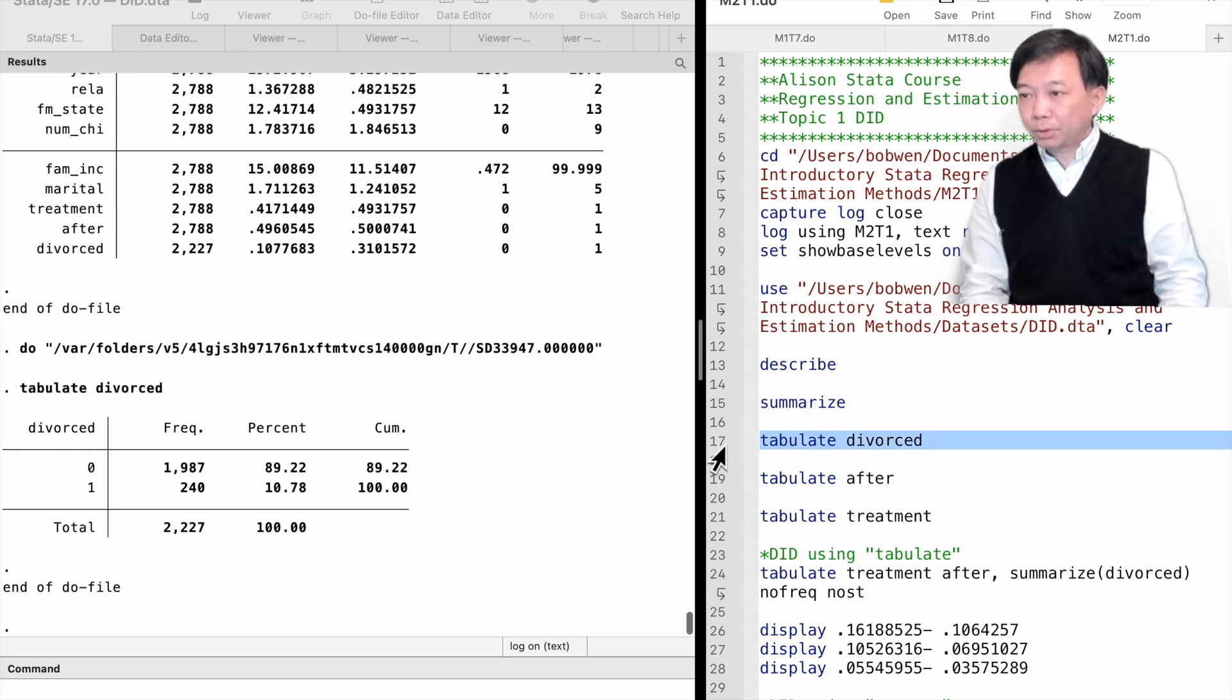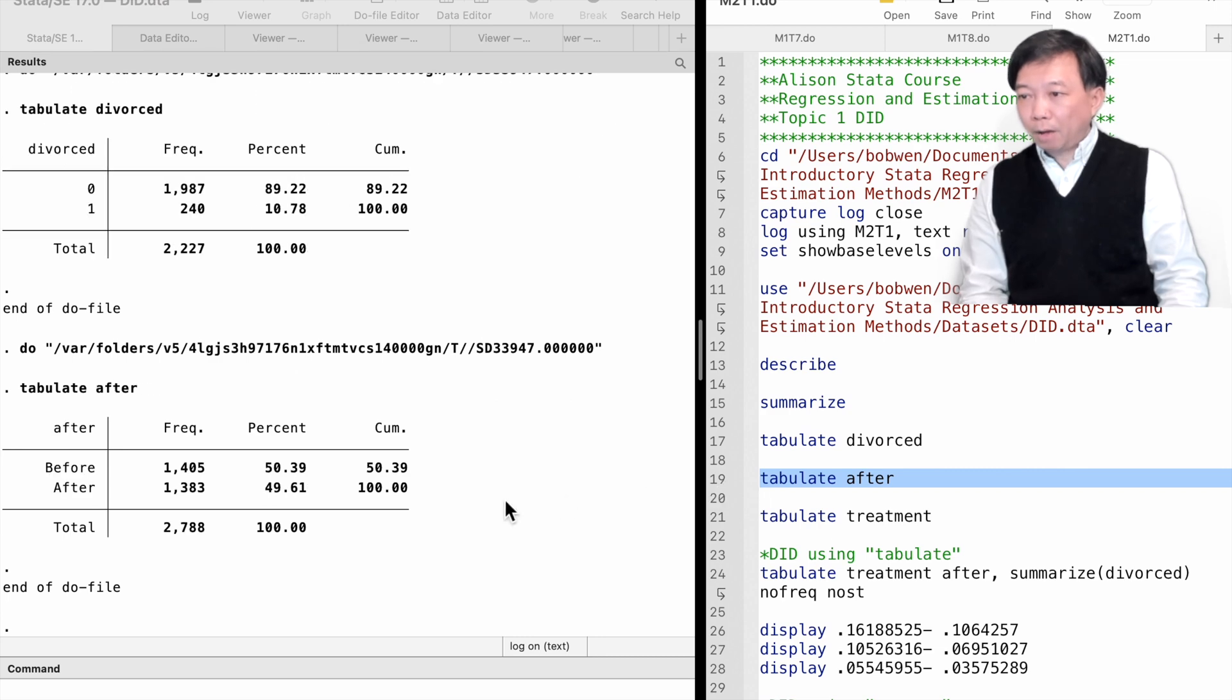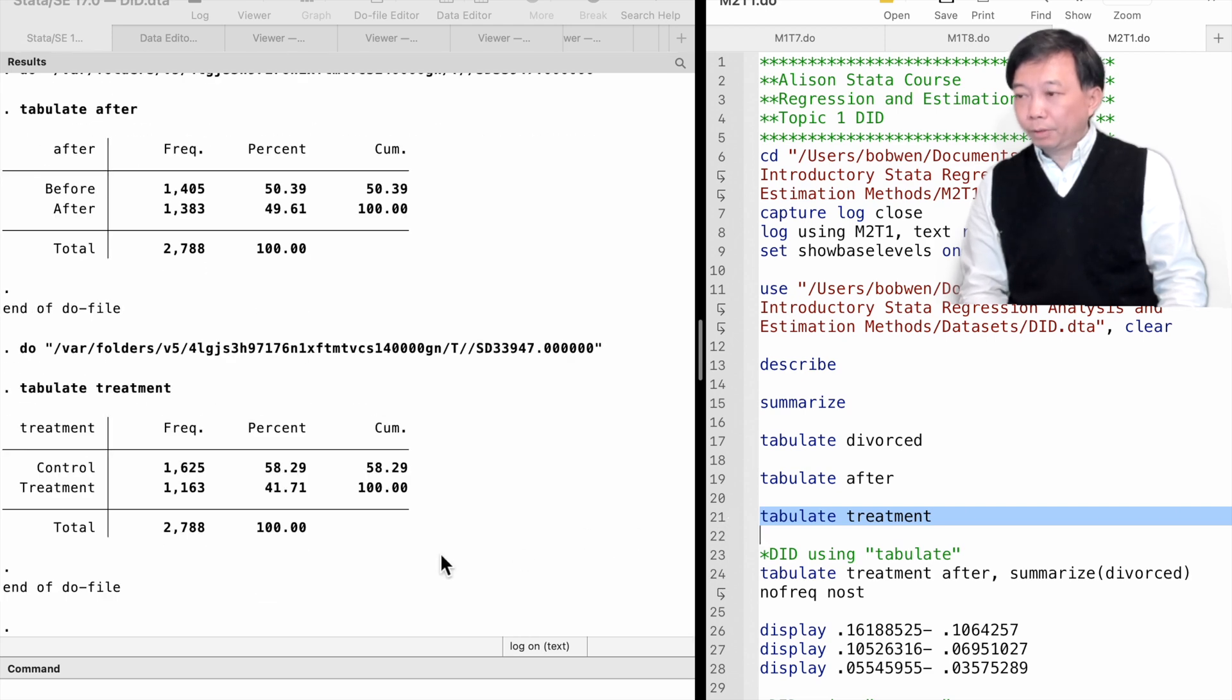The variable divorced indicates people's marital status. It is equal to 1 if divorced, it is 0 if married. The variable after indicates the time periods after or before the introduction of the no-fault divorce law. The treatment variable equals 1 if living in Indiana and 0 if living in Illinois. We use the tabulate command to generate a one-way tabulation for the variables and find the percentage of each category.